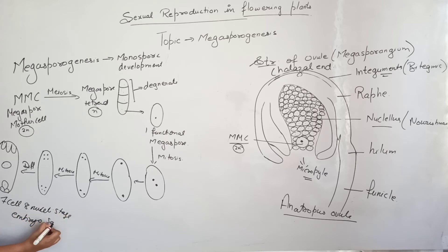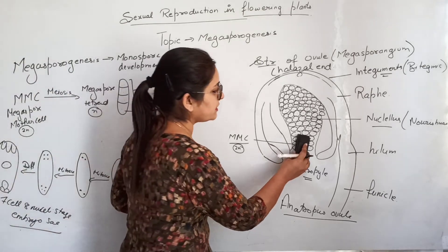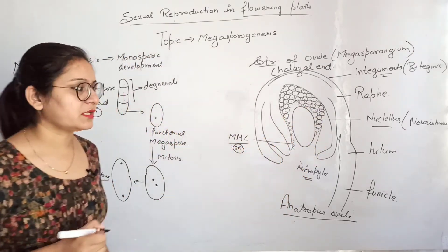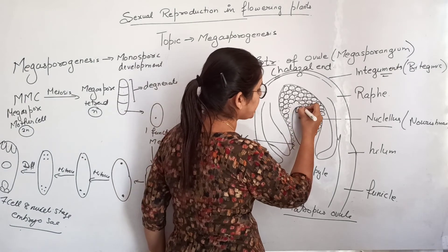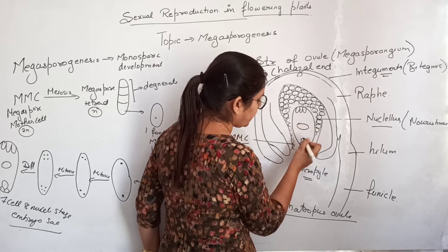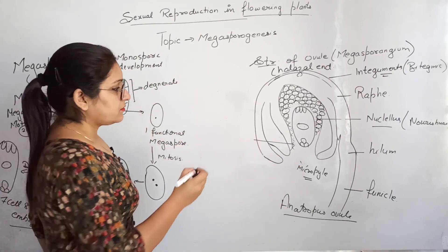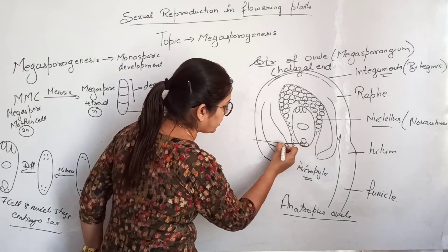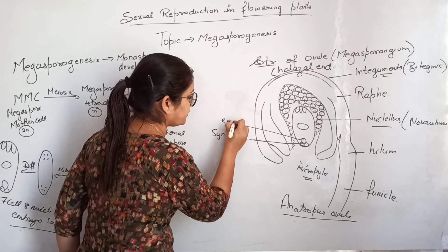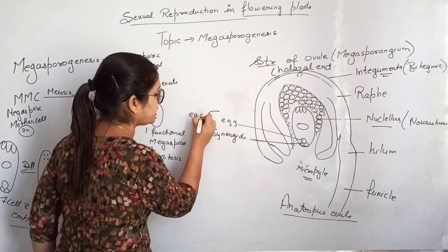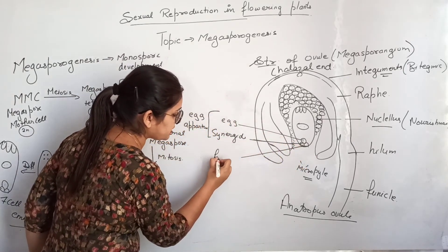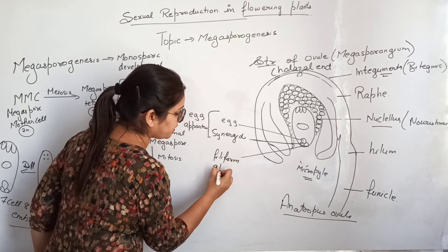This 7-cell 8-nuclei stage is known as the mature embryo sac, formed inside the ovule on the micropyle side after utilizing nutrition from the nucellus cells. On the micropyle side, three cells are present: two smaller ones are known as synergids and the larger one is the egg, representing the female gamete. Together they are known as the egg apparatus.